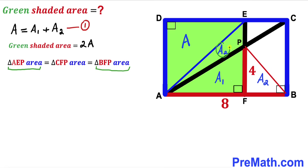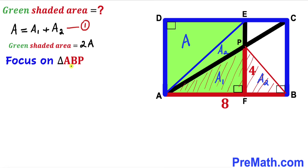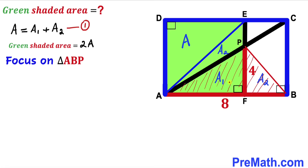Now let's focus on triangle ABP. Its area is the sum of the two individual areas A sub 1 and A sub 2. From equation 1, we know that A sub 1 plus A sub 2 equals uppercase A. So the area of triangle ABP is simply uppercase A.